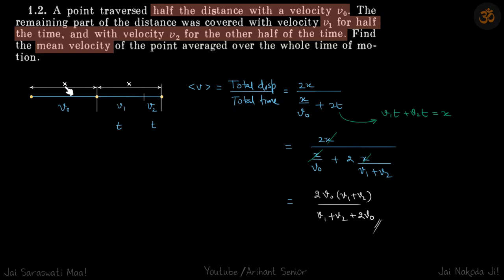We are assuming the variables x and t. We need to find the average velocity, which is total displacement divided by total time.